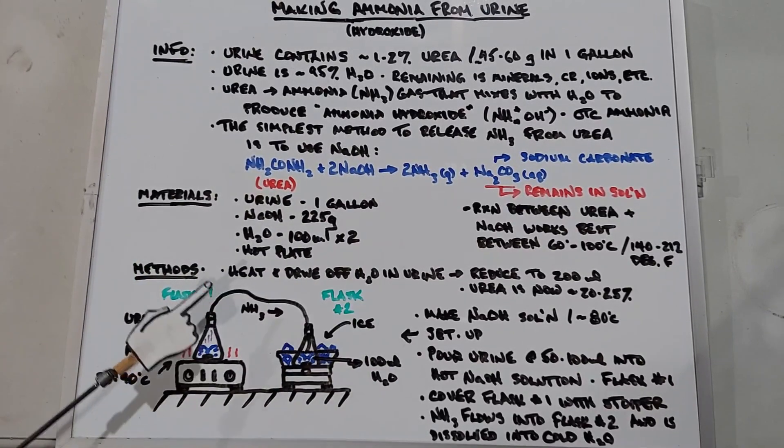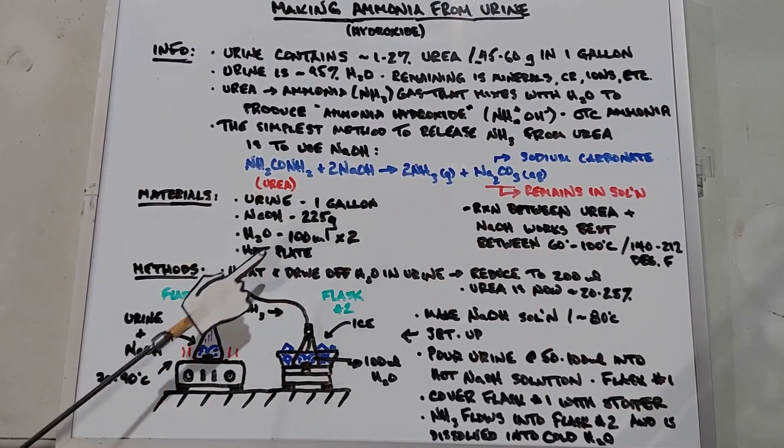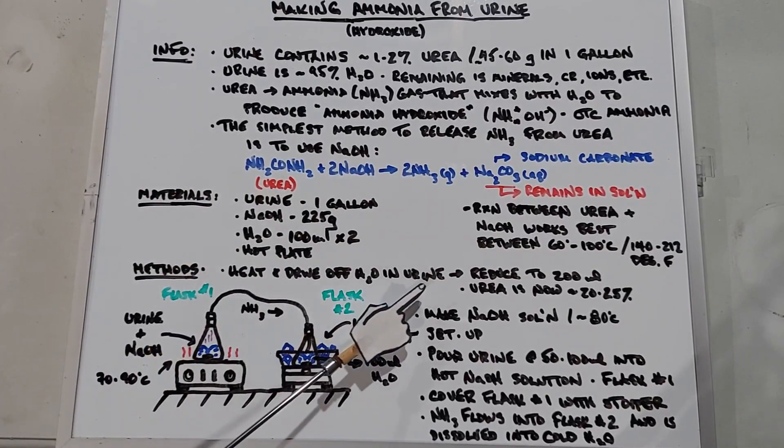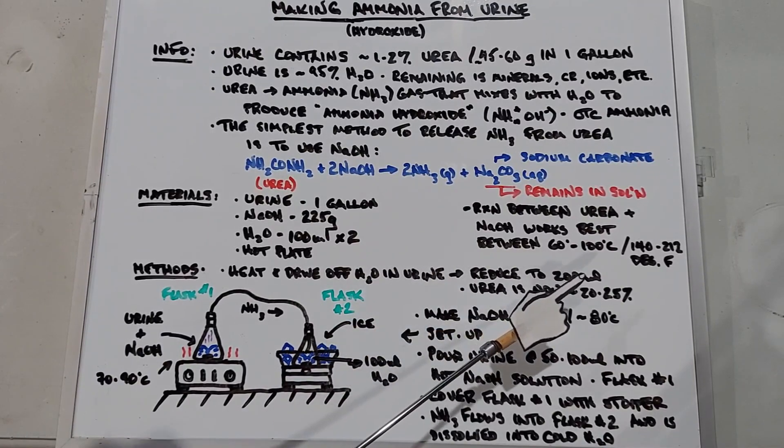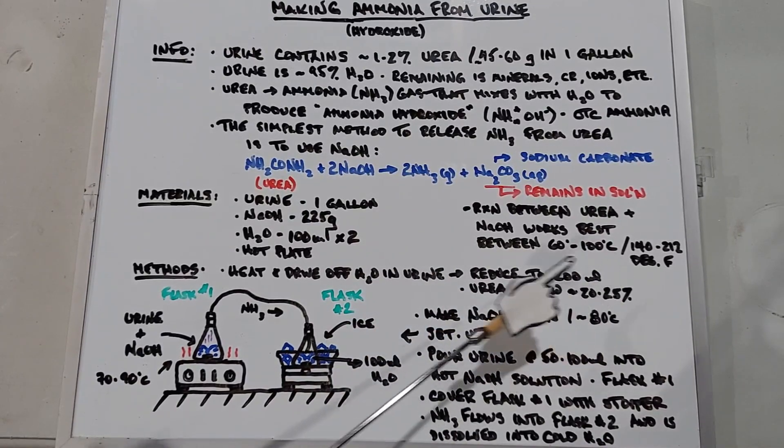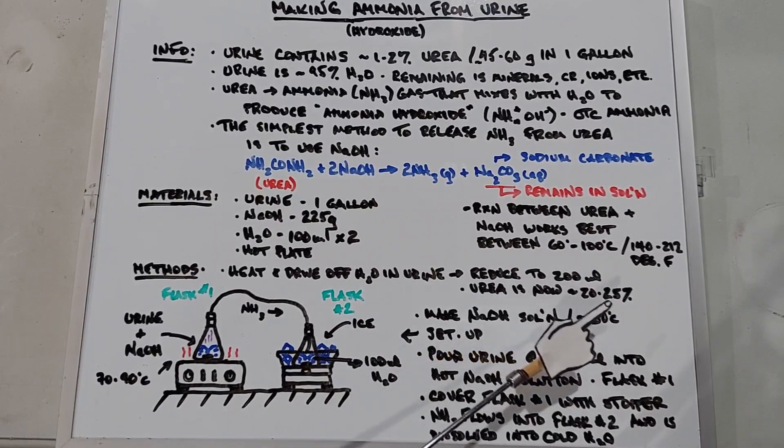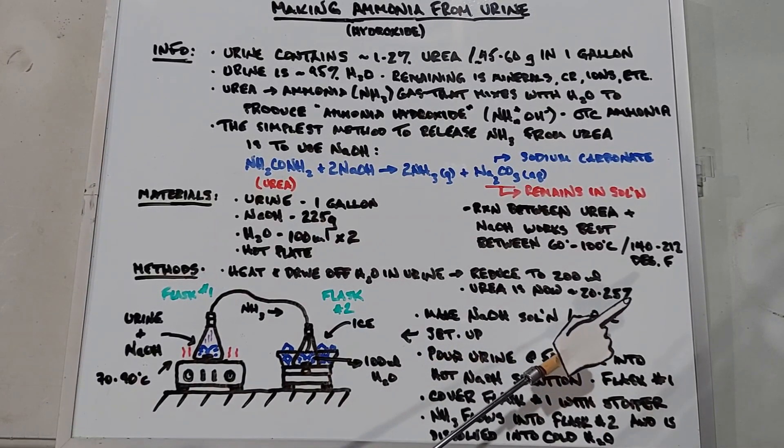First thing we need to do is take our gallon of urine and drive off as much water as we can. That's going to take some time but it's necessary to reduce it to about 200 milliliters, and in that 200 milliliters you now have approximately 20 to 25 percent urea.